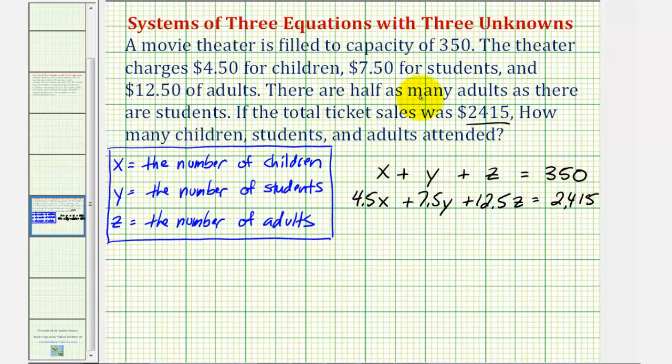We're also told that there are half as many adults as there are students. So if there's half as many adults as students, the number of adults z would equal the number of students y divided by 2, or one-half times y.